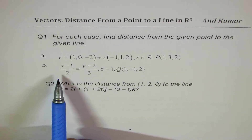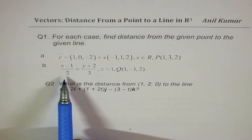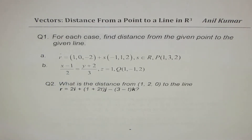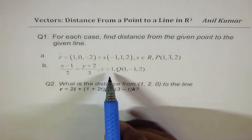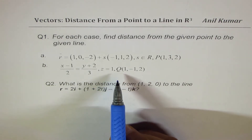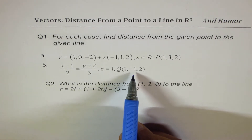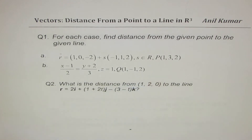Part B is a symmetric equation: x minus 1 over 2 equals y minus 2 over 3, z equals 1, and the point Q is given as (1, minus 1, 2).